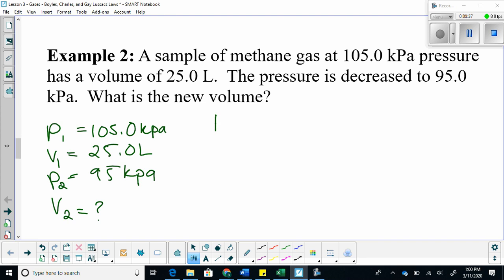We use our formula: P1 V1 is equal to P2 V2. From here, we are isolating for V2. So I am going to divide both sides by P2. On this side, we cancel out. And V2 is equal to P1 V1 over P2.